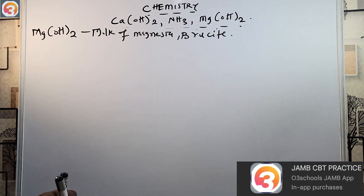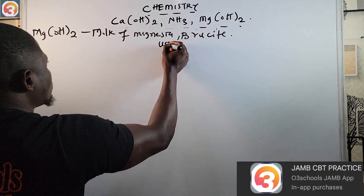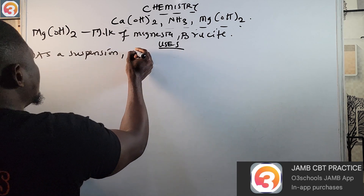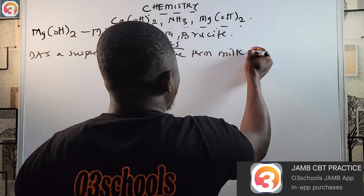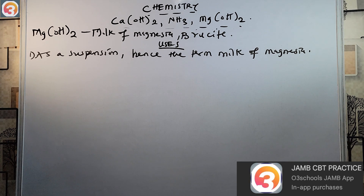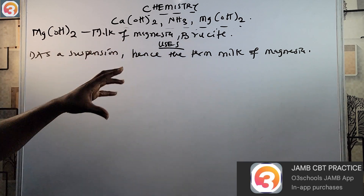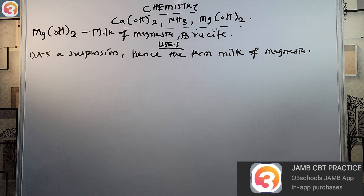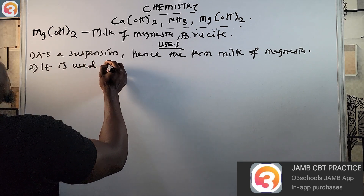Magnesium hydroxide is useful as a suspension — hence the term milk of magnesia. It takes on the appearance of milk, which is why it is given this other name.